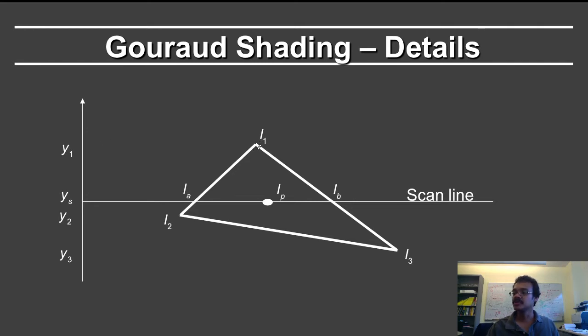iA lies between i1 and i2. So if you want to do the interpolation, we do it along the vertical direction. Look at the length of this region and the length of this region. So the length of this region is y1 minus ys. The length here is ys minus y2. The total length of course is y1 minus y2.